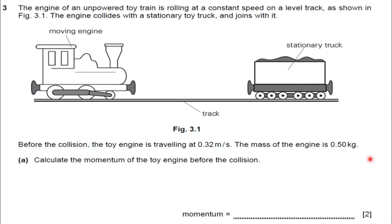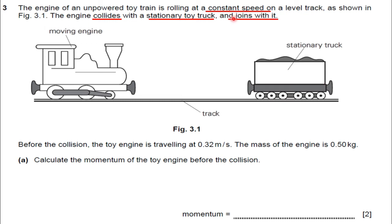Now we are going to discuss the IGCSE 2020 specimen paper — specimen paper 4, question number 3. Read the question carefully: the engine of an unpowered toy train is rolling at constant speed on a level track. As shown in figure 3.1, the engine collides with a stationary toy truck and joins with it. Underline the keywords: constant speed, collides, stationary toy truck, and joins with it. From these keywords we can identify that the velocity of the truck is 0.